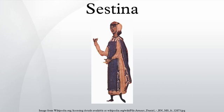A sestina is a fixed verse form consisting of six stanzas of six lines each, normally followed by a three-line envoy. The words that end each line of the first stanza are used as line endings in each of the following stanzas, rotated in a set pattern.